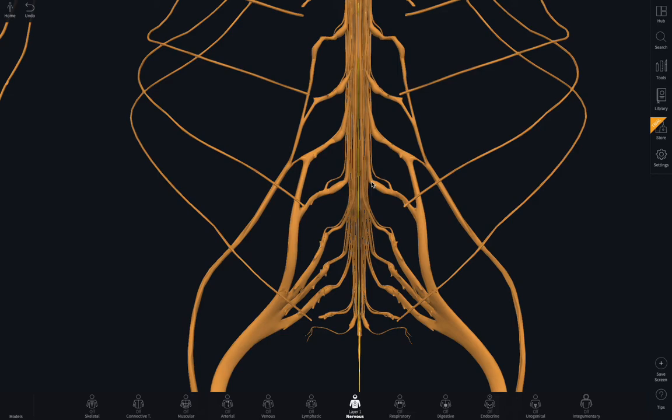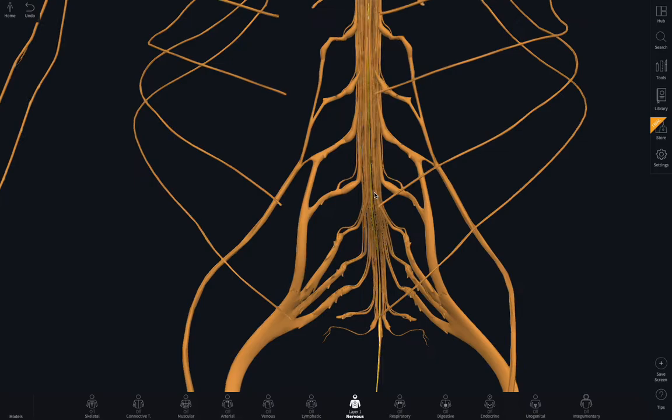But the most likely thing, given your age, and given that you've felt something go on your back, is that you've had a bit of a disc herniation. We can talk about that later. But that disc herniation is pressing on that nerve root somewhat. Pressing on it and crowding it out.